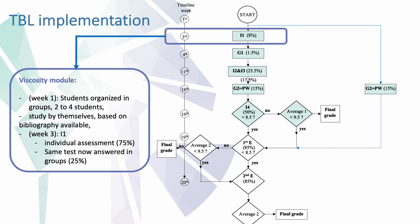For the TBL implementation, the students were asked to study the viscosity model by themselves, organized into 20 groups, after the bibliography was made available to them. After two weeks, an individual assessment was made, and when concluded, the students were asked to answer it again but now organized in groups. This methodology may allow students to develop the capacity to discuss with their peers the subject in analysis, solving practical problems. At the end of the activity, the teachers discussed the answers with each group. The final grade for this module, I1, resulted from a weighted average of the individual and group grades: 75% and 25% respectively.